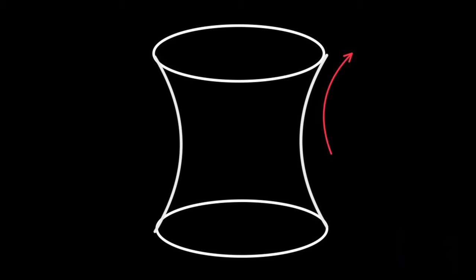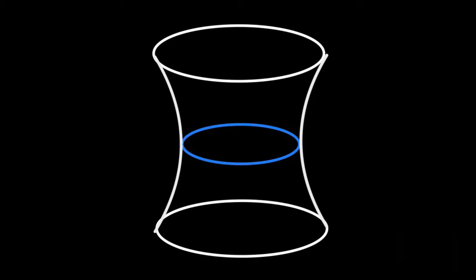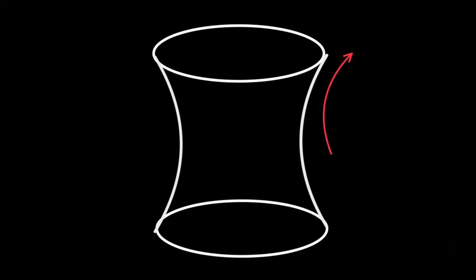Geometrically, de Sitter space can just be thought of as a hyperboloid — a constantly expanding sphere in one higher dimension. As an empty space with only a cosmological constant, it has constant curvature. This may seem weird at first. For small scales where you can forget about the cosmological constant — like around the earth, say a satellite orbiting the earth — the energy-momentum tensor with its constant is actually equivalent to the Einstein tensor on the left, which includes the Ricci scalar, Ricci tensor, and metric. This characterizes the geometry of space-time. Mass gives you curvature.